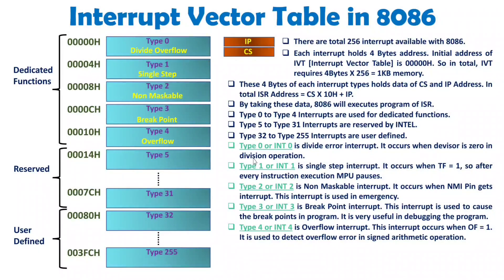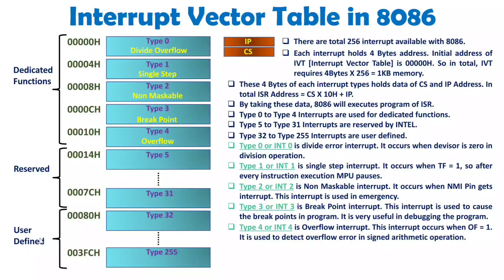These are the dedicated functions available with 8086, and these functions have well-defined programs loaded in the memory of 8086. When it comes to user-defined interrupts, the user can design interrupts as per their requirements. For example, if you want a printing operation, you can define interrupts for that. The program you load at the address defined by the 4 bytes of IP and CS will be executed whenever that interrupt is called.